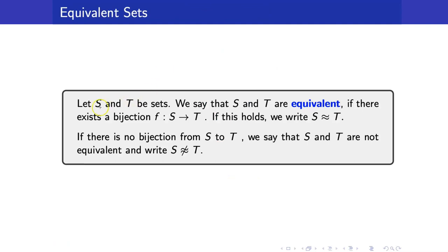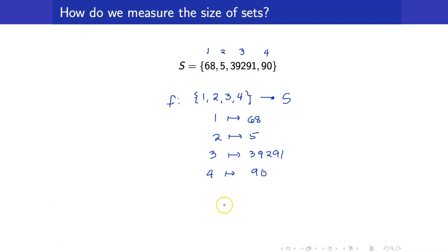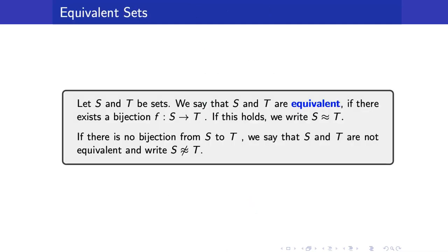Suppose that we have two sets, S and T. We say that they are equivalent if there exists a bijection from S to T. If this holds, we write that S is equivalent to T. So going back to this example, we now say that the set containing {1, 2, 3, 4} is equivalent to the set S.